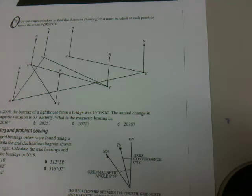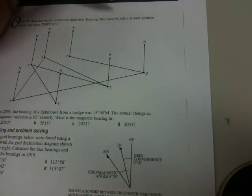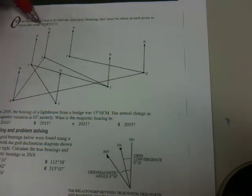Ok, test for question 2 on navigation. In this case we're using the diagram to find the direction that must be taken at each point to travel the route P to Q, Q to R, R to S.